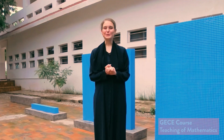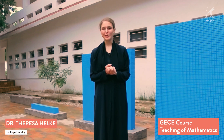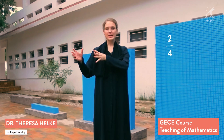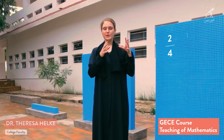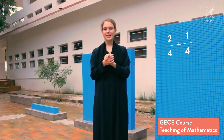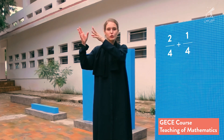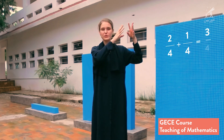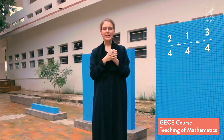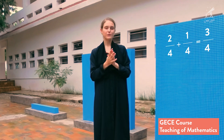How did you learn to add fractions with the same denominator? For example, two-fourths plus one-fourth. Did your instructor tell you to add the numerators — two plus one equals three — and keep the denominators the same, four, making three-fourths?